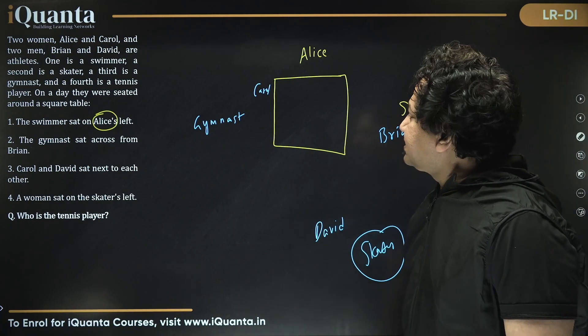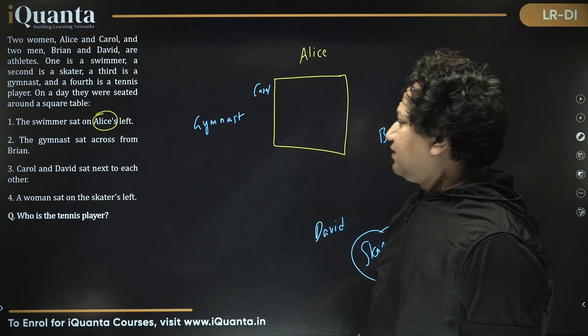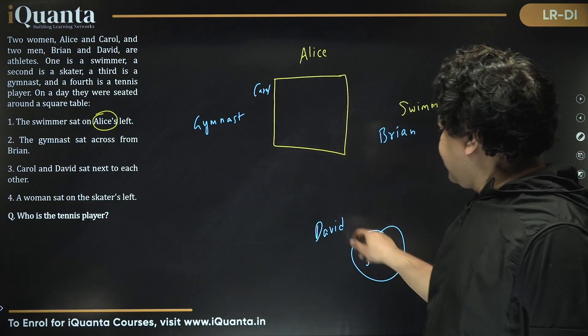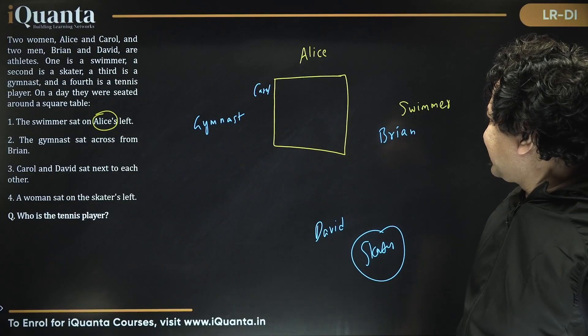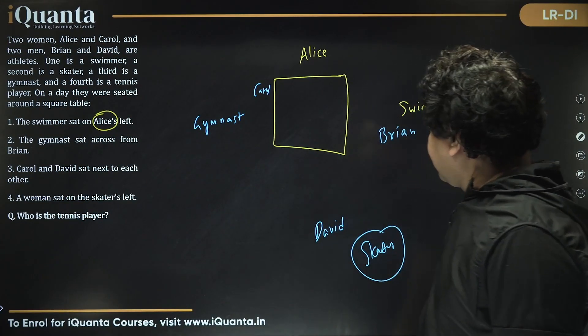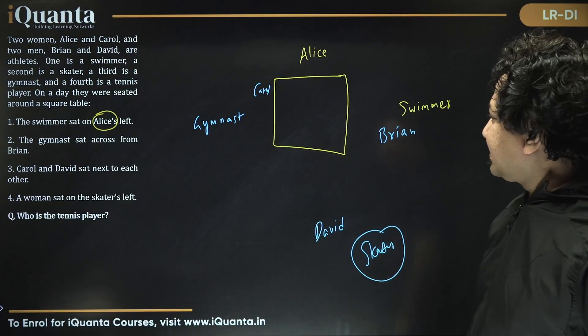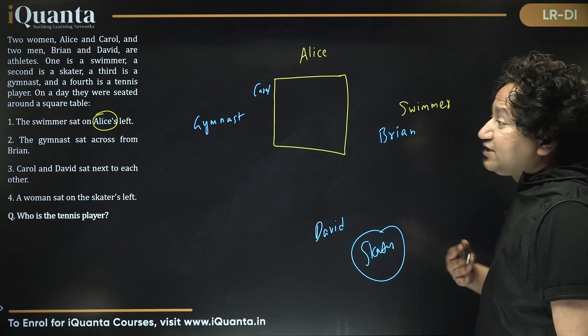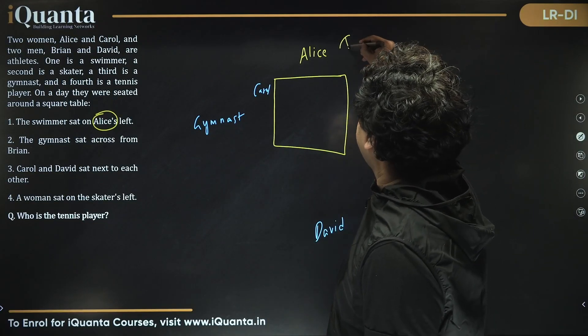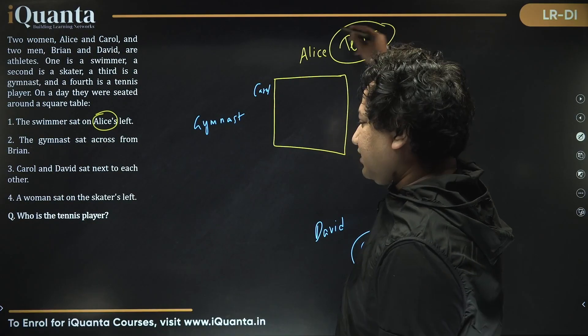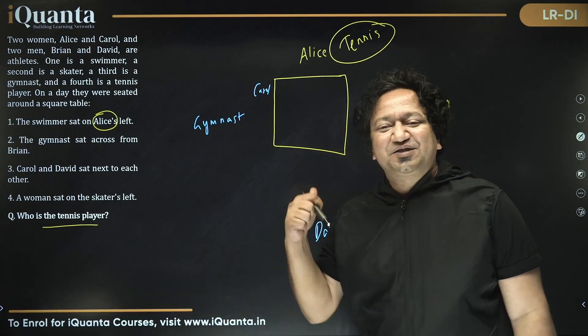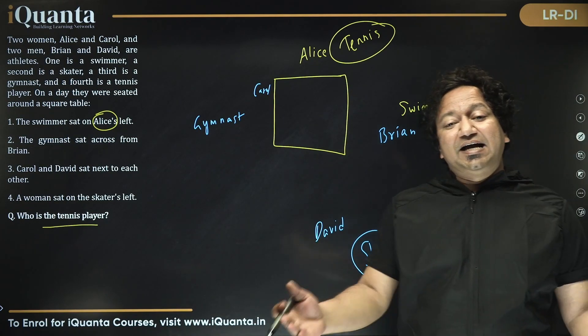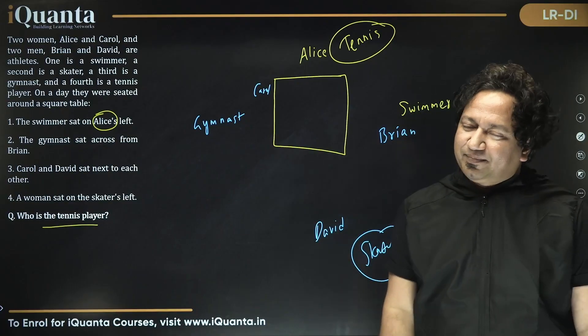So now if you look at this, swimmer sat on Alice's left, that is true. And this is Brian. Gymnast sat across from Brian, that is gymnast. This is Carol. Carol David sitting next to each other, that is true. And woman sat on skater's left. Skater must be David. If David is a skater, woman is Carol. So the only sport remaining is tennis, which must be going to Alice. And that is what the question is. Who is the tennis player? It must be Alice. An easy peasy puzzle. But at the very same time, it also gives you enough insight into how to look at arrangement based logical puzzles. Thank you.